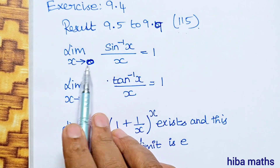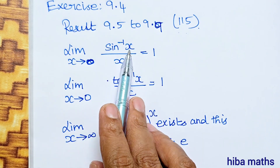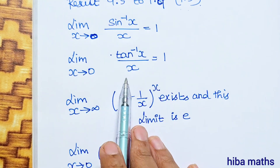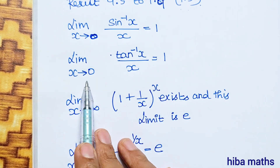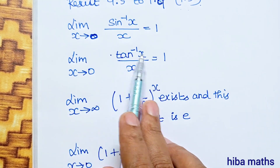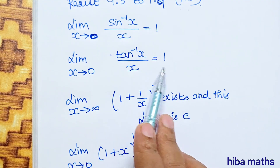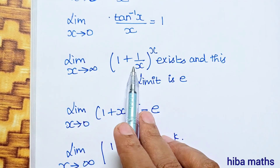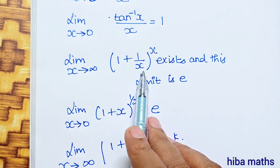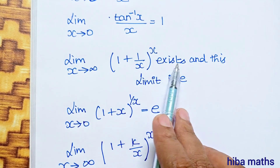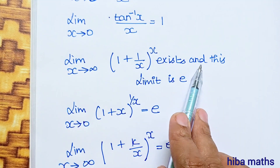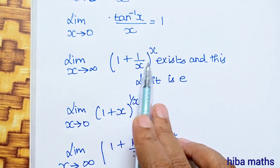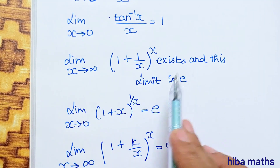Standard results: Limit x turns to 0, sin inverse x by x is equal to 1. Limit x turns to 0, tan inverse x by x is equal to 1. Limit x turns to infinity, 1 plus 1 by x, whole power x exists, and this limit is e.